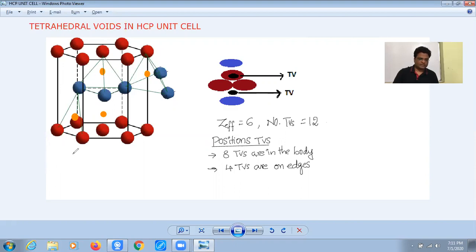But contribution of each edge towards each unit cell is one third, 12 times 1/3, because each edge is shared by three unit cells. So the contribution will be one third by each tetrahedral void on the edge. There are totally twelve tetrahedral voids on edges together. The effective number of tetrahedral voids from edges is four, and the remaining eight are found within the body.